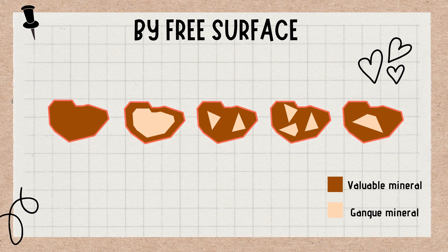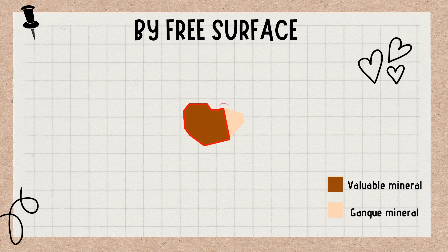Here we have another set of examples. In the first one, the entire perimeter of the valuable mineral is exposed, so it is 100% liberated. For the next one, 25% of the perimeter is covered by the gangue mineral, so it is only 75% liberated.